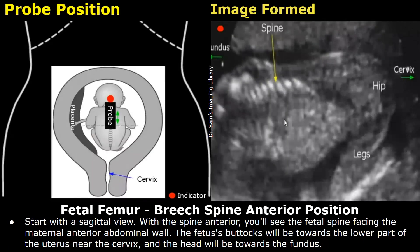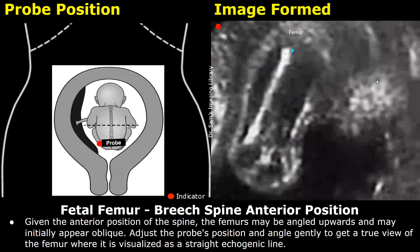Now we will see how to locate the femur in a fetus that is in a breech position with anterior spine. Due to the anterior position of the spine, the femurs may be angled upwards and may initially appear oblique. Adjust the probe's position accordingly and angle gently to get a true view of the femur, where it is seen as a straight echogenic line. It can be difficult to obtain a horizontal orientation of the femur in some cases, so try to adjust the probe to get the best view possible.